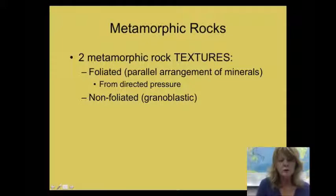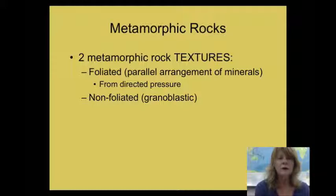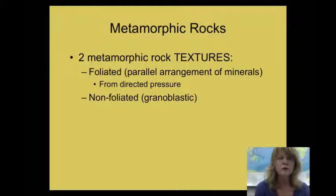At regional metamorphism and metamorphic belts, you'll see foliated rocks. The minerals that make up the parent rock can actually change shape if subjected to enough heat and directed pressure, and you can see that in the foliated pattern of the rocks.